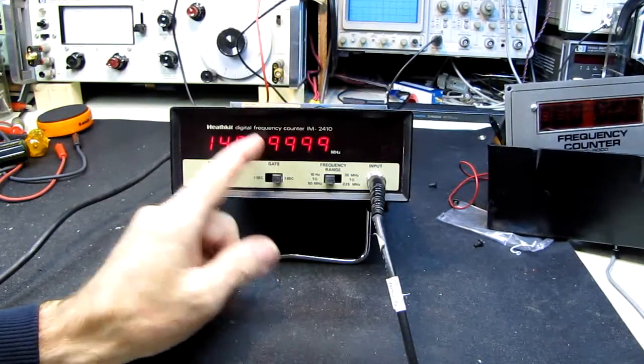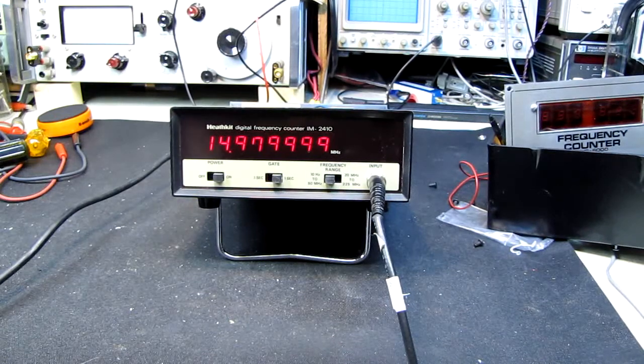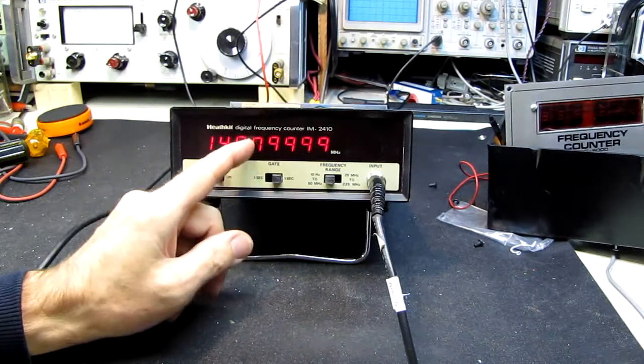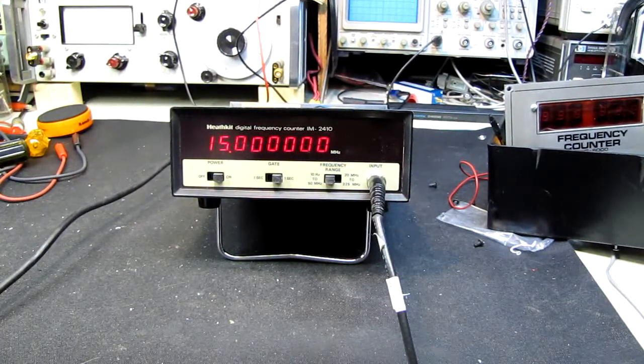So that digit looks fine. The center segment on that LED is not working. It's either a bad seven segment display or the driver's gone flaky.